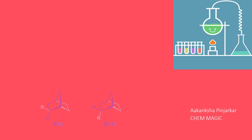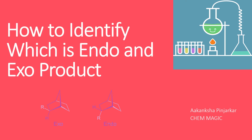Now moving towards the topic of today's video. You may have heard about endo and exo isomerism. We come across it many times. Endo and exo isomerism is a special type of stereoisomerism found in organic compounds having a substituent on a bridged ring system. You may also have heard about the Diels-Alder reaction, in which we get the endo and the exo as products.